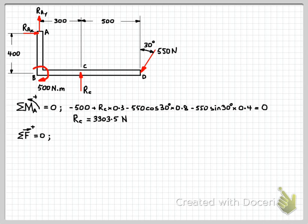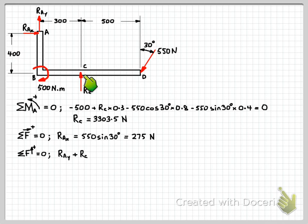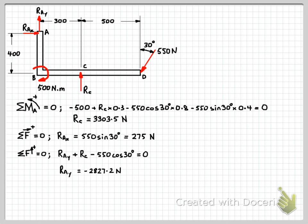Applying the sum of forces in the horizontal direction equals zero: we only have RAX and the horizontal component of the 550 N force, giving RAX = 550 sin 30 = 275 N. For the sum of forces in the vertical direction equals zero: RAY plus RC minus 550 cos 30 = 0. Substituting in RC and solving gives us RAY.